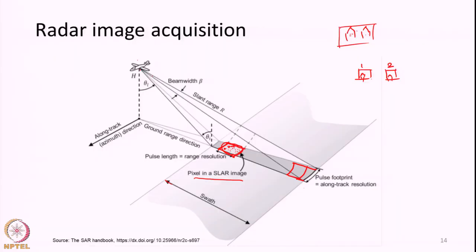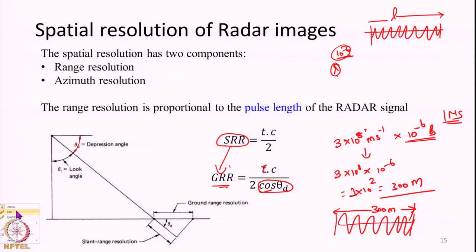In imaging radar, the resolution has to be defined separately in two directions: the pixel size in the range direction and the azimuth direction. Yesterday we discussed resolution in the range direction, which is determined by the pulse length of the radar system. Looking at this picture, this pixel size will vary in both the range direction and azimuth direction, and we discussed the variation of resolution in the range direction.